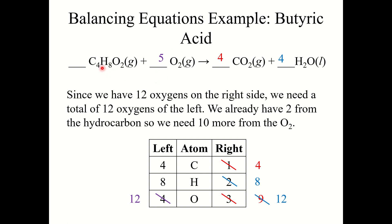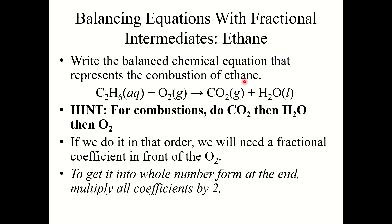Double checking: 4 carbon atoms on both sides, 8 hydrogen atoms on both sides, and 12 oxygen atoms on both sides. I'm going to stop here and split this section into two halves. I'll see you in the second half when we get into fractional intermediates and then learn about net ionic equations.